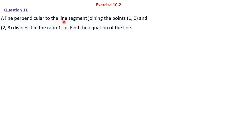Let's begin with question number 11. A line perpendicular to the line segment joining the points (1,0) and (2,3) divides it in the ratio 1 is to n. Find the equation of the line. So here, a line perpendicular to another line — the second line has endpoints (1,0) and (2,3) — divides it in the ratio 1 is to n. We have to find the equation of this perpendicular line.